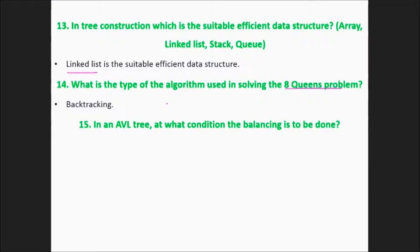In an AVL tree, at what condition is the balancing to be done? It is a pivotal value, also known as height factor. When this is greater than one or less than minus one, this is the condition for balancing.